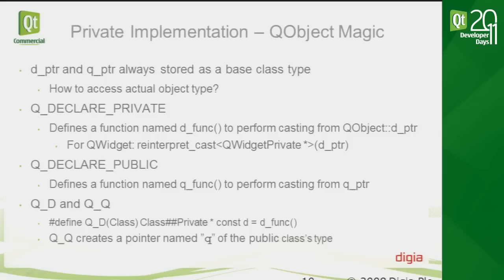Q_DECLARE_PUBLIC is very similar to Q_DECLARE_PRIVATE but used on the private side, defining a q_func() to perform casting from the q-pointer. On top of those functions, you don't even need to use them directly because there is one more layer: the Q_D and Q_Q macros, which introduce a local variable to access the private or public side. Q_D calls the d_func() method to create a local d-pointer, and Q_Q creates a pointer named q to the public class type.